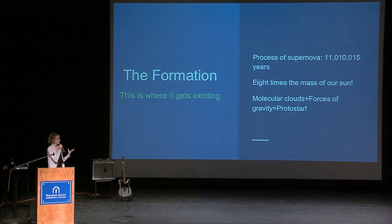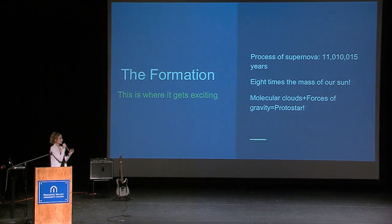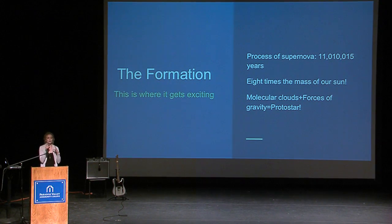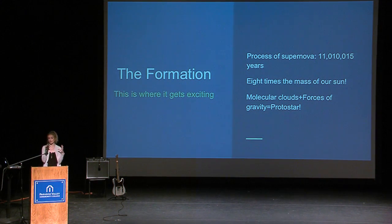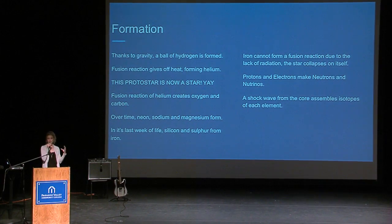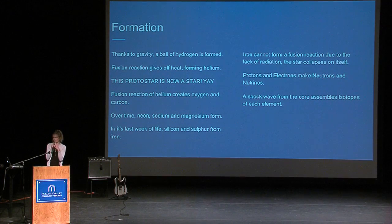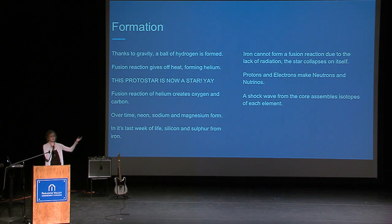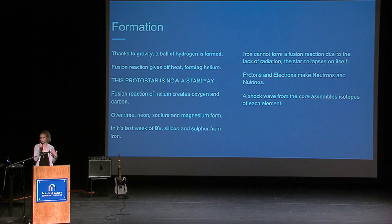Now for the formation. The process to make a supernova, which will eventually become a neutron star, takes just a little over 11 million years. For a star to become a neutron star, it needs to be within eight to 25 times the size of our sun. It all starts with molecular clouds forced by gravity that form a protostar. Hydrogen, thanks to gravity, is forced towards the center and a fusion reaction gives off heat and force, while gravity pushing on that force forms the round sphere. The fusion reaction of hydrogen then forms helium, and because of this fusion reaction, it no longer needs gravity in order to sustain itself.